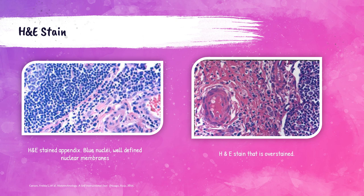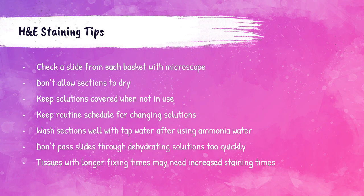The left-hand photo shows a properly stained H&E appendix section — blue nuclei with well-defined nuclear membranes. The right-hand photo shows the same specimen overstained, with loss of differentiation between non-nuclear elements and poor contrast between nuclei and cytoplasm. Following staining, one slide from each basket should be checked under the microscope to ensure proper staining. If using an automated stainer, a control slide should be stained to ensure it is working properly.